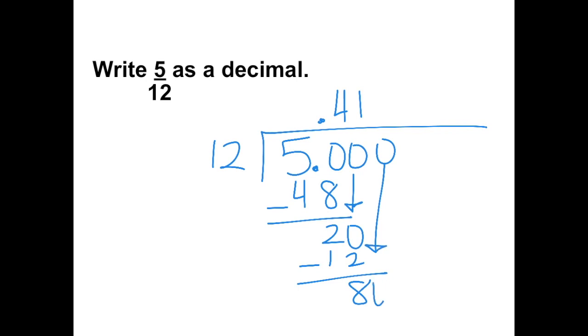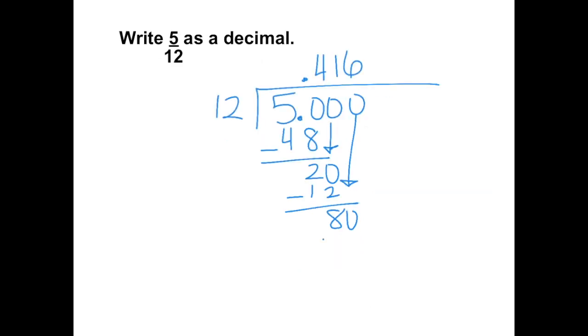Bring down a zero. Twelve goes into eighty six times. This equals seventy-two. Bring down a zero. Twelve goes into eighty six times again. So now we notice a pattern.